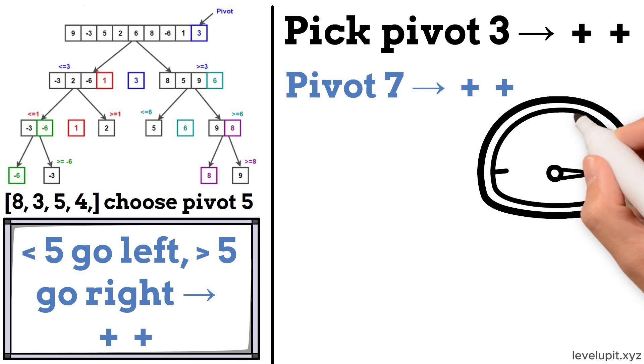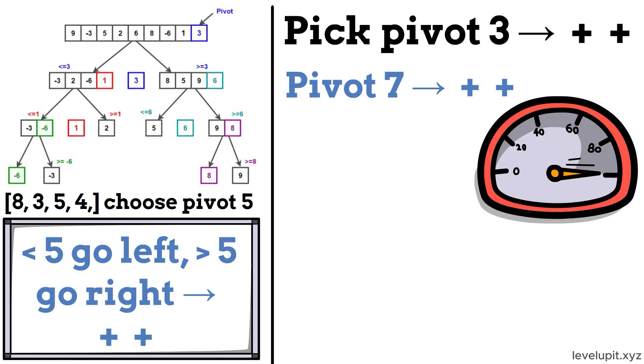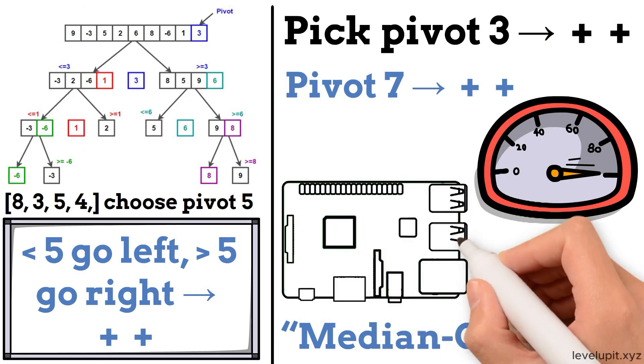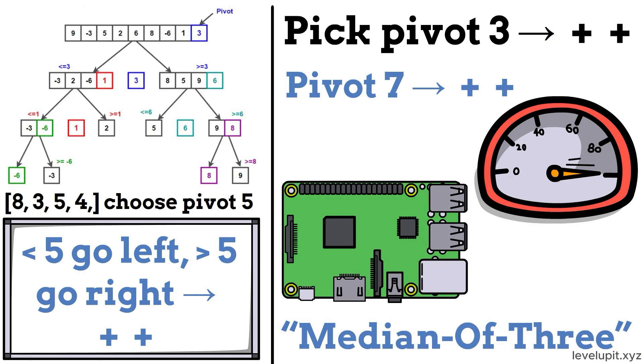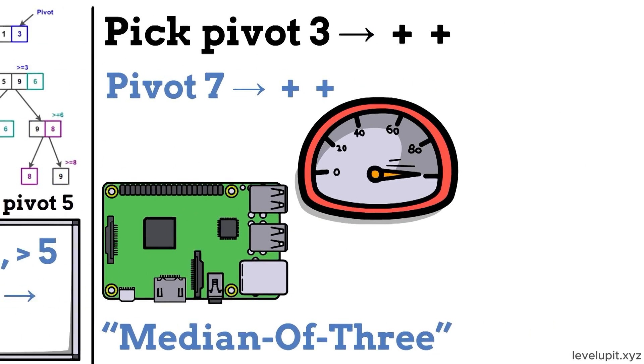Quicksort is often the fastest in practice, especially with good pivot choices like median of 3: first, middle, last. It usually uses little extra memory and works in place, which is handy.